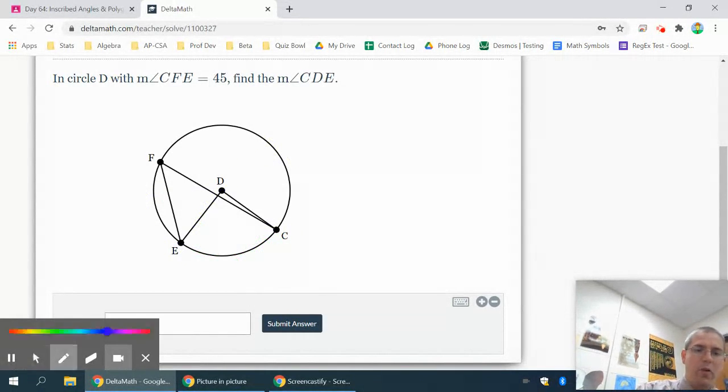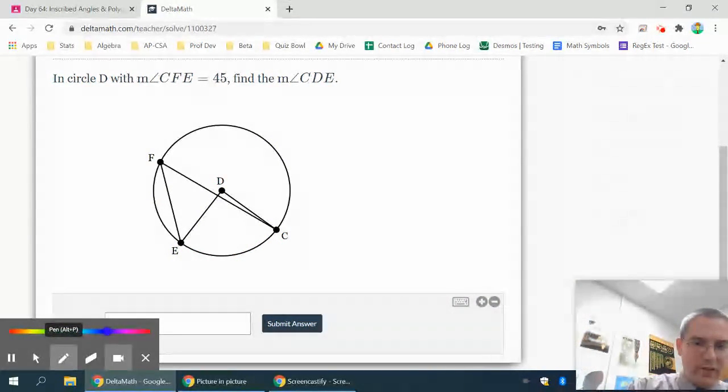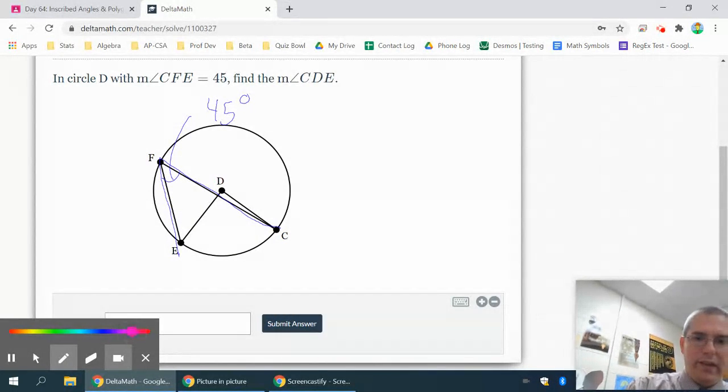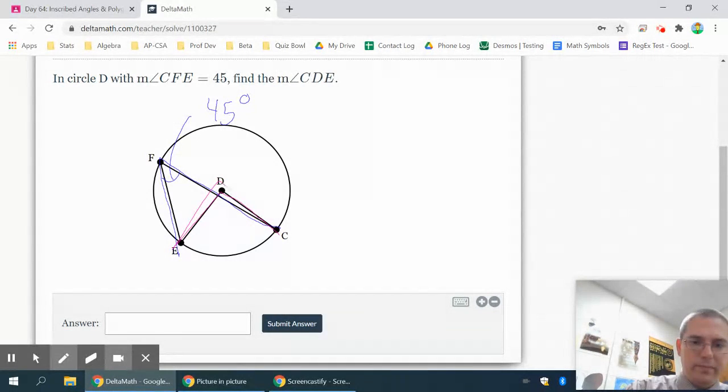Okay, so mark what they give you. They have C, F, E. So they're talking starting at C, going to F, going to E. This here is 45 degrees. And what they're asking for is C, D, E, which is this angle in the middle. So if this is 45 degrees, to get that, I'm going to need to get the arc first.